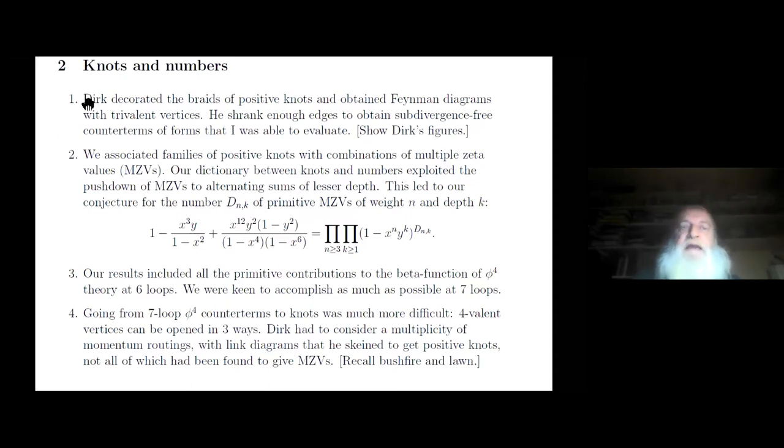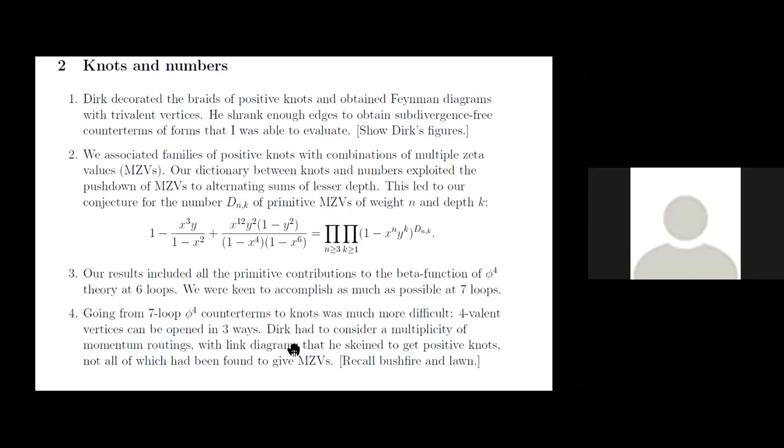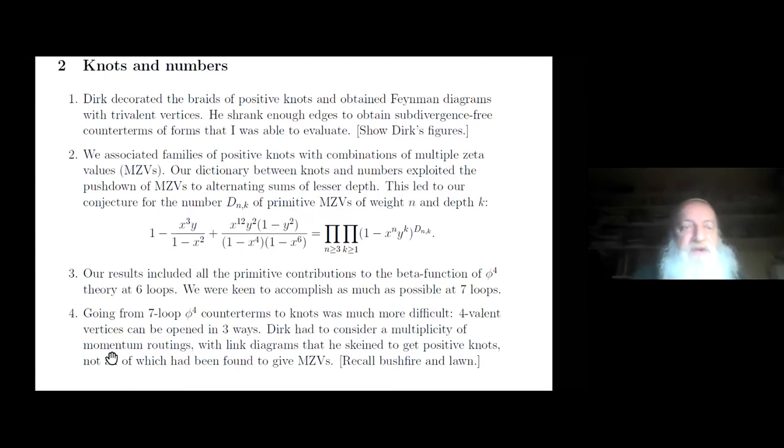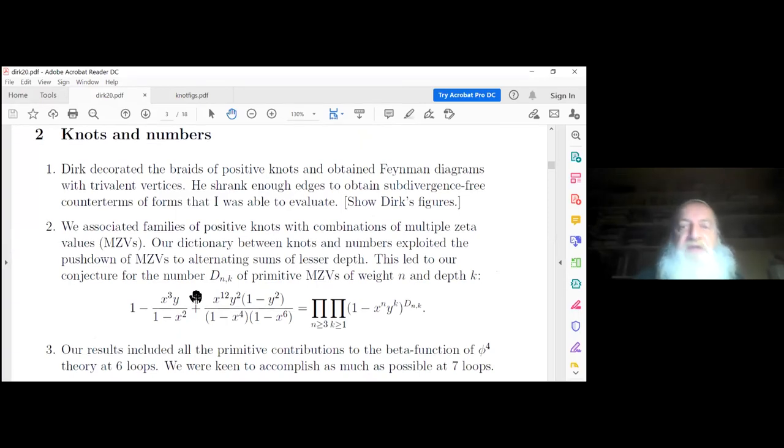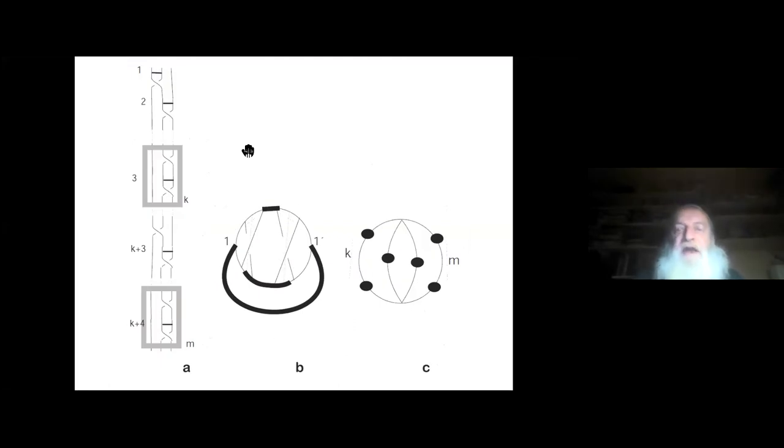Now, what he didn't know was that I had done calculations back in 1985 of counterterms involving zeta 3 and zeta 5 and zeta 7, but also some numbers I couldn't identify, but I strongly suspected were double sums. So what we were able to do was to test his intuition, the rules that he was developing against case law. Now let me show you some pictures.